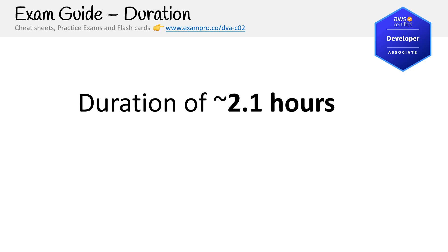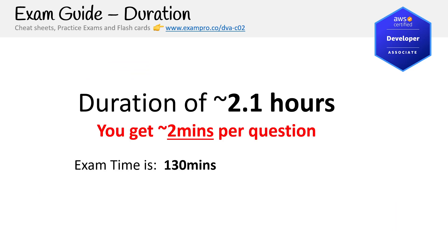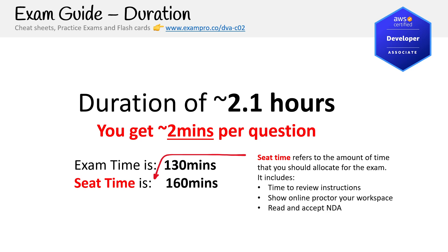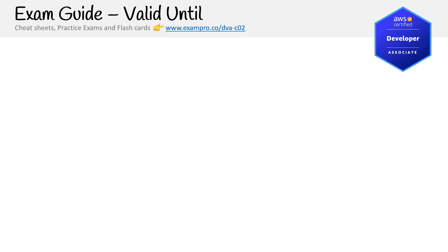How much time do you have on the exam? 2.1 hours — that's 130 minutes of actual exam time, with 160 minutes of seat time. Seat time includes reviewing instructions, showing the online proctor your workspace, reading and accepting the NDA, completing the exam, and providing feedback at the end. Double-check these times because they change them frequently, but this is the correct info at time of recording. You don't want to be caught finding out you have less time than expected.